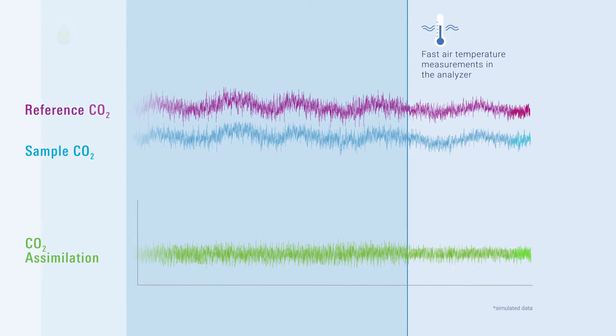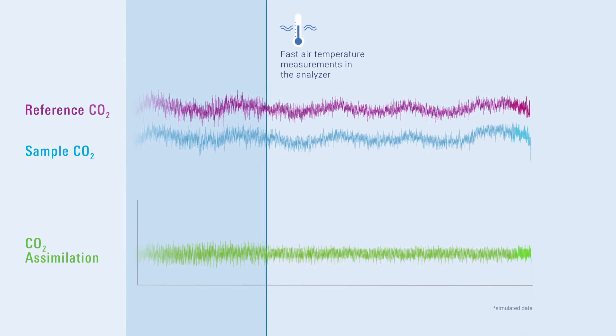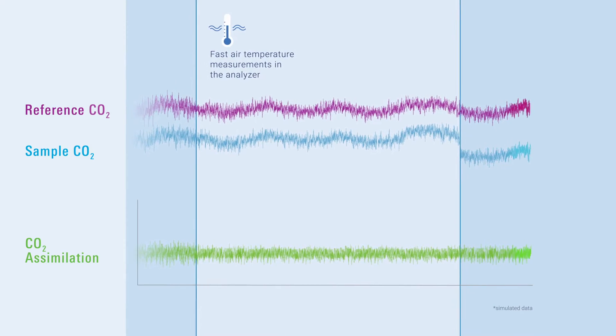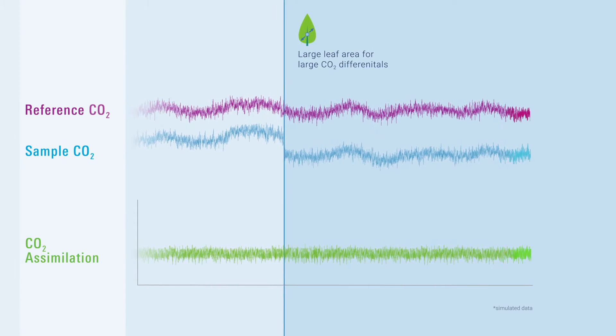High-speed measurements of air temperature inside the gas analyzer improve the precision of gas density measurements. Larger leaf area means a bigger difference between sample and reference gas concentrations.